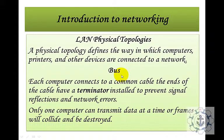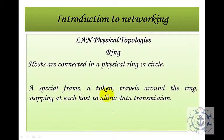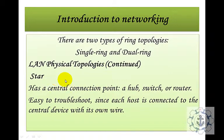In bus topology, each computer connects to a common cable with terminators at each end to prevent signal reflection and network errors. Only one computer can transmit data at a time; otherwise all frames will collide and be destroyed. In ring topology, hosts are connected in a physical ring or circle, and a special frame called a token travels around the ring, stopping at each host to allow data transmission.